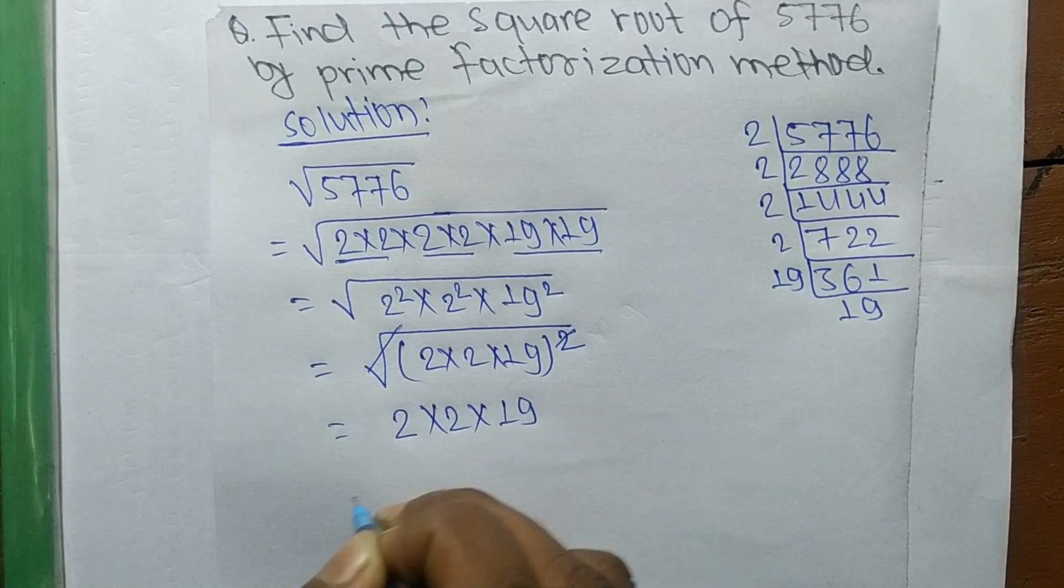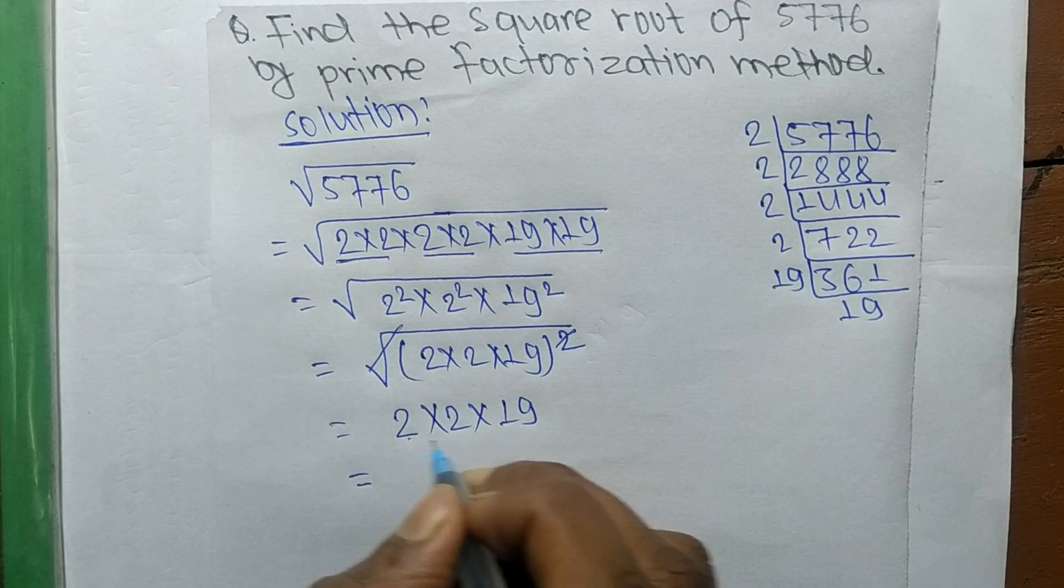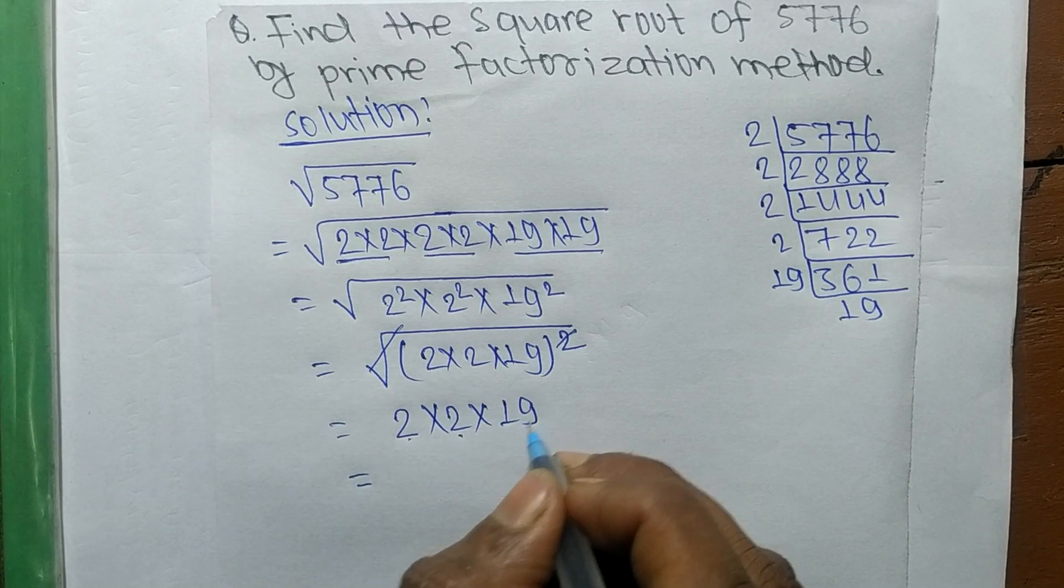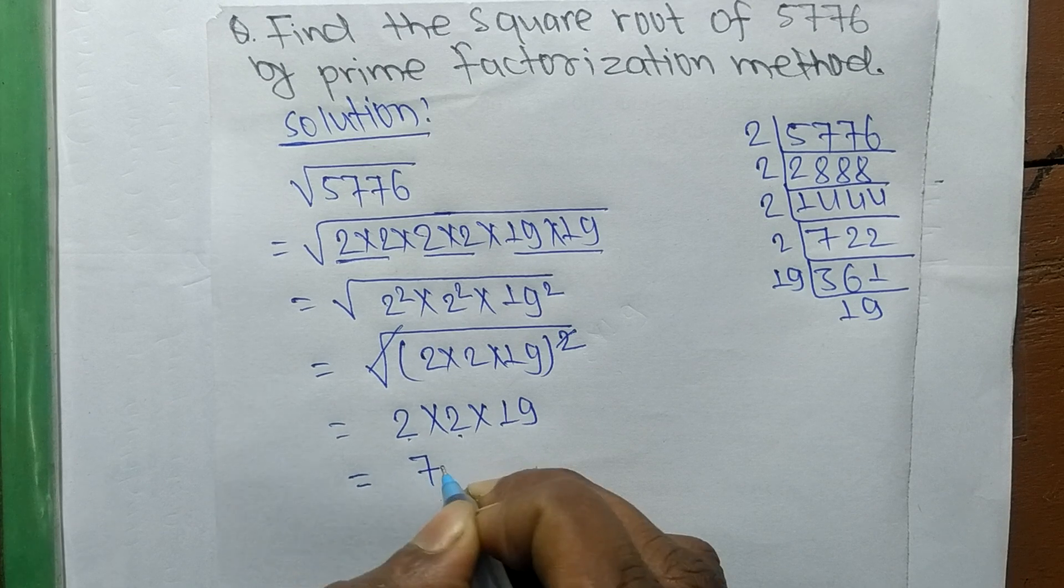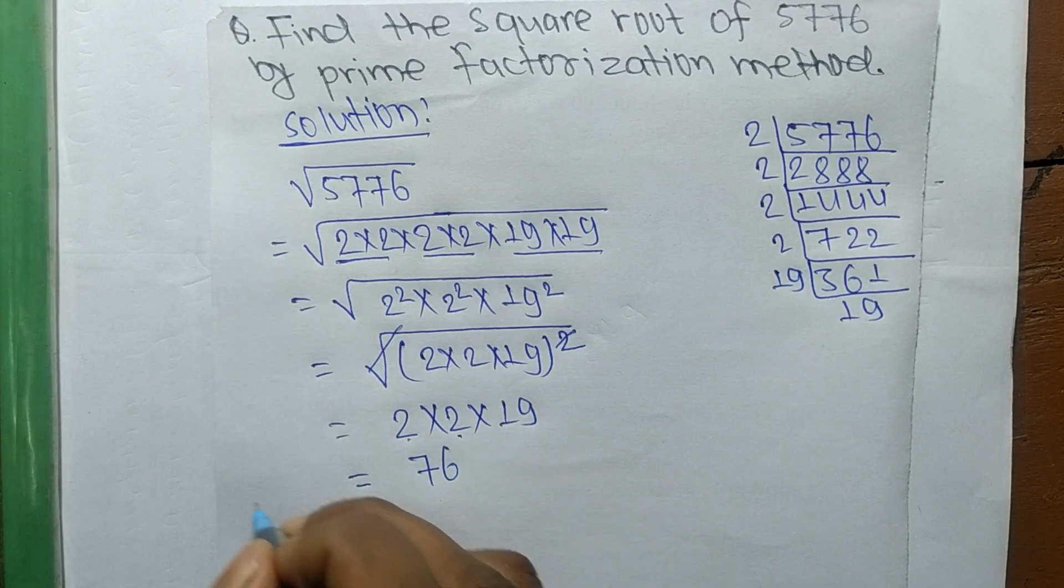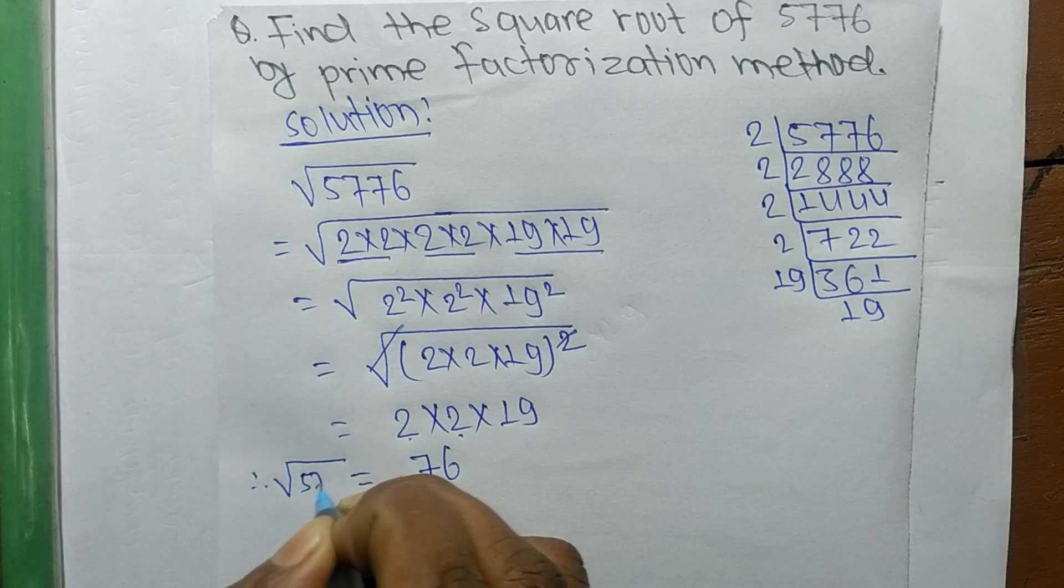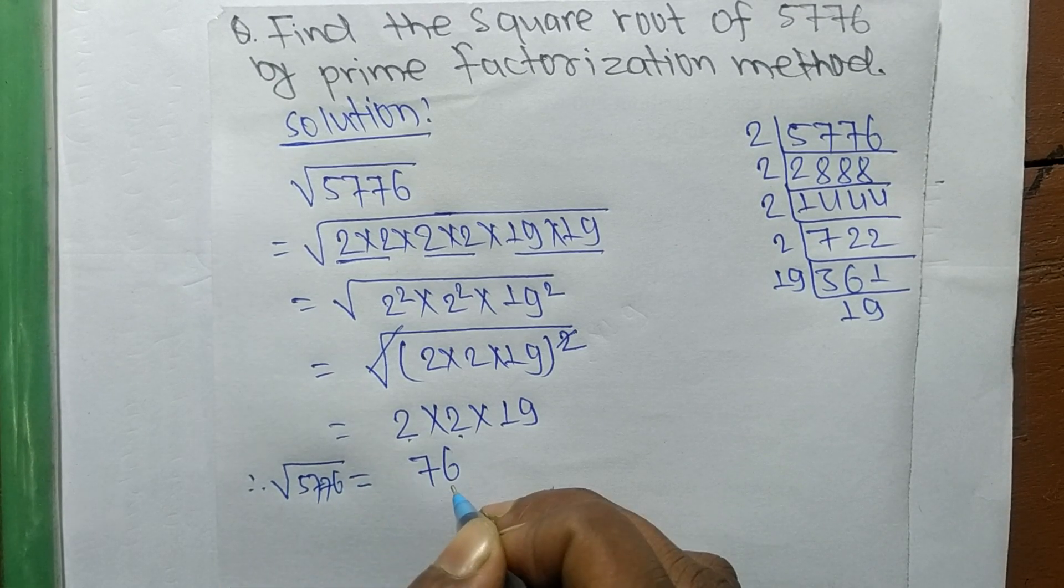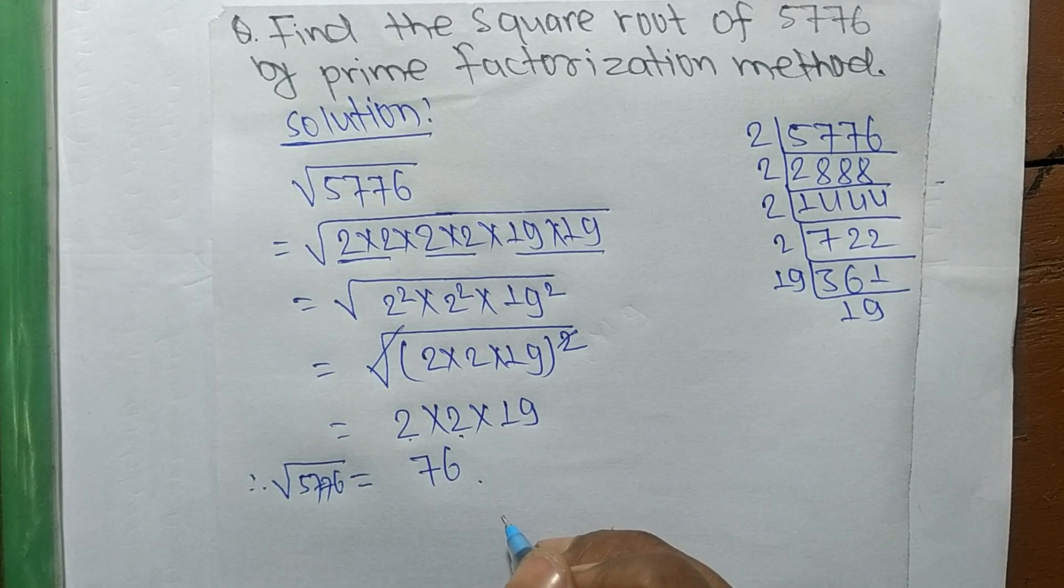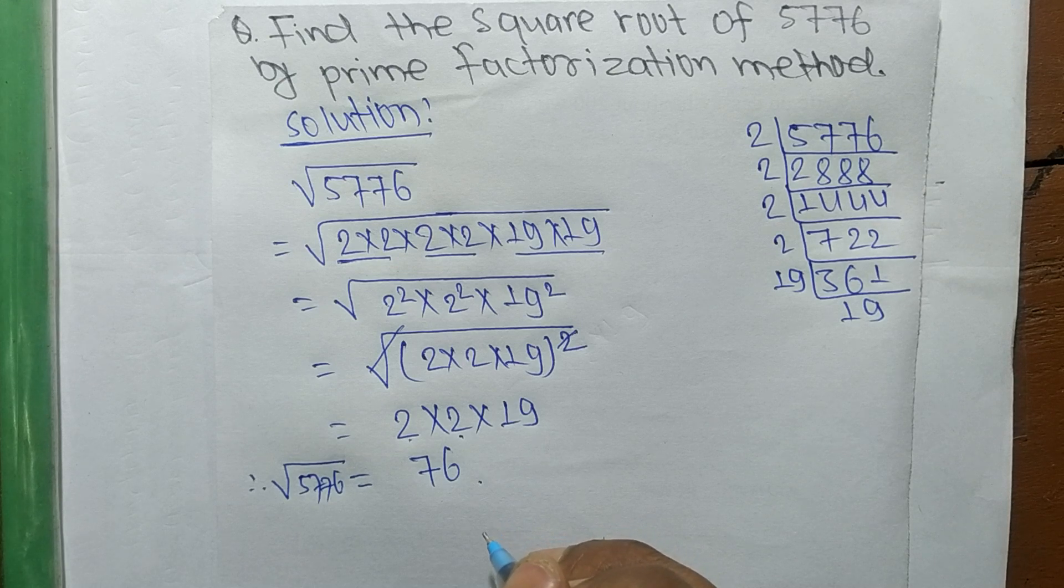2 × 2 is 4, and 4 × 19 is 76. Therefore, the square root of 5776 is equal to 76. So this much for today.